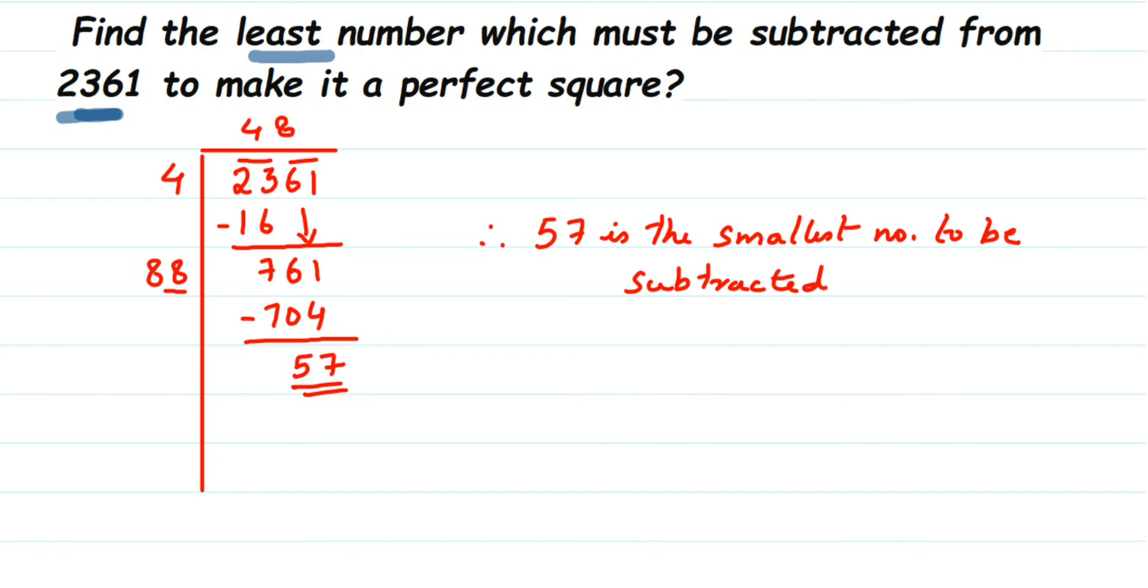Now suppose in case I ask you in the question, find out the square root of that number, that is after subtracting it. So let me subtract here. So 2361 minus 57, when you do it, it will be equal to